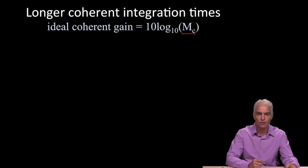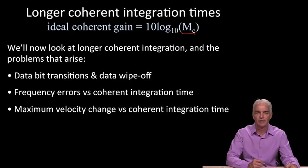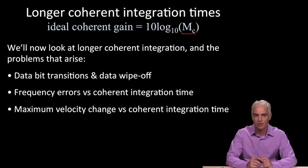What happens if you try that? Well, what happens is that problems arise. And they fall into three categories. The first problem is that there are data bit transitions, which we'll look at first. There's also frequency errors that occur. And if the velocity of the receiver changes, that is a problem. So we'll look at each of those now.